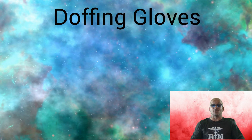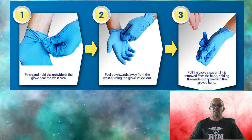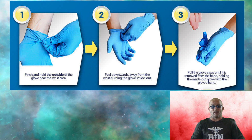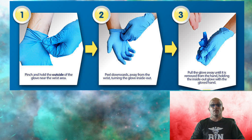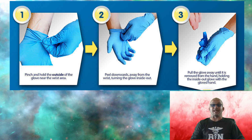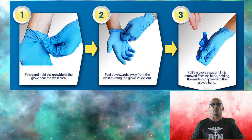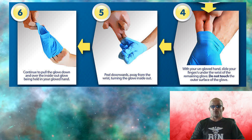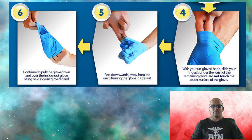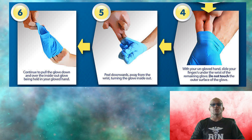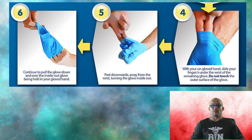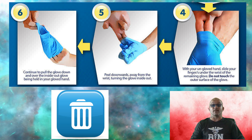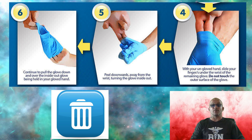Now let's discuss doffing sterile or clean gloves. Grasp the outer part of one glove at the wrist and pull the glove over the fingers and into the hand that is still gloved. Then place the non-gloved hand into the inside of the cuff and pull that soiled glove off so that it is inside out and only the clean part is exposed. Discard the gloves into the appropriate receptacle.